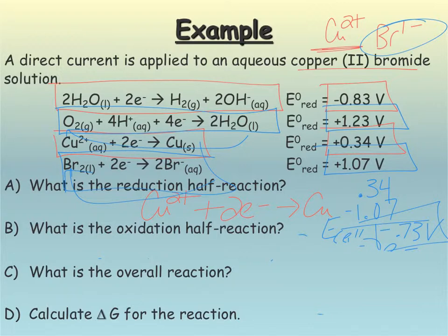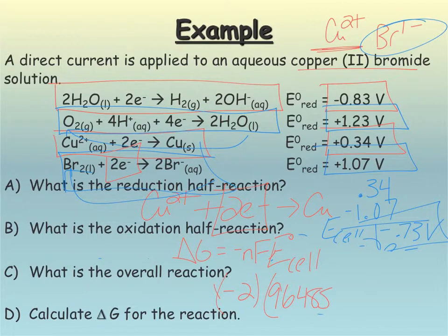All right. And now I need to apply my delta G equals negative N F E cell. Okay. So looking at electrons. Okay. So I had 2 on my copper and 2 on my bromine. So it's going to be 2. So negative 2 times Faraday's, which is 96,485. And then my negative 0.73. Okay. Plug all that in and I get my delta G value to be positive